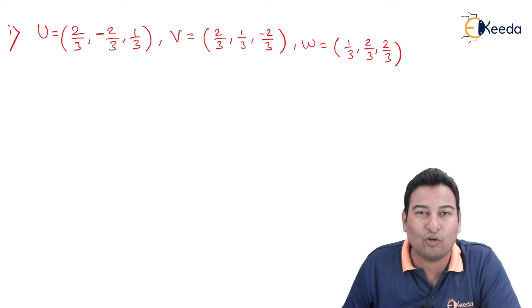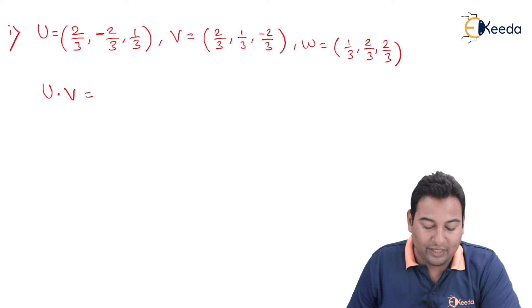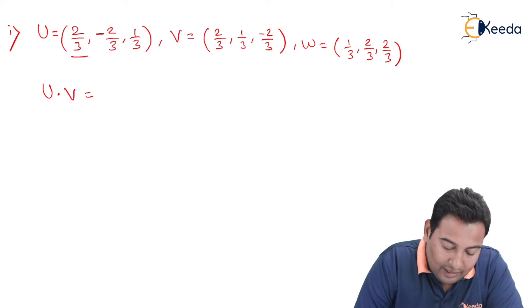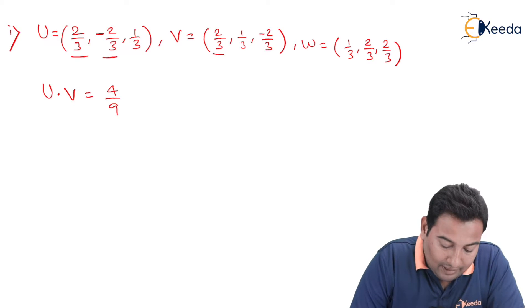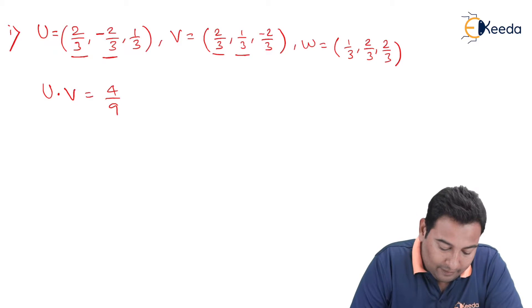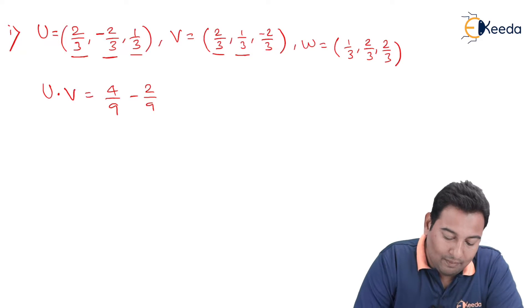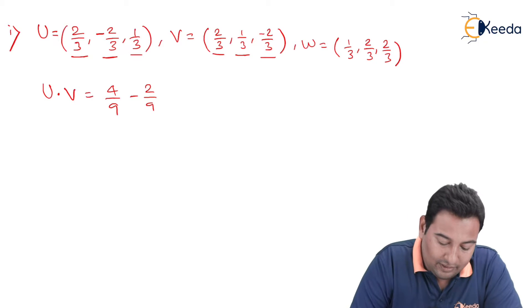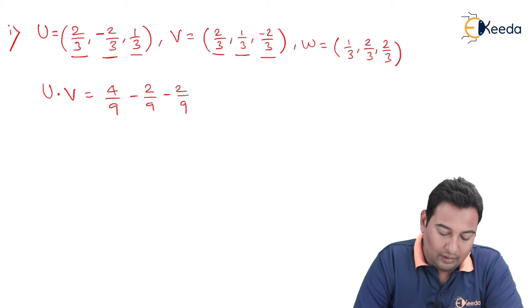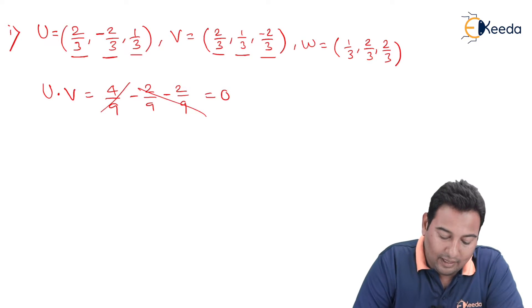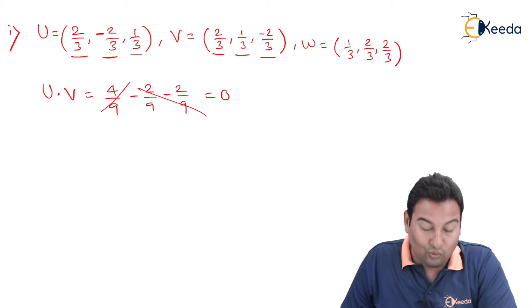For that purpose we need to check u dot v. 2/3 times 2/3 is 4/9; minus 2/3 times 1/3 is −2/9; and 1/3 times −2/3 is −2/9. These cancel out and you get the result as 0. First condition verified: u dot v equals 0.